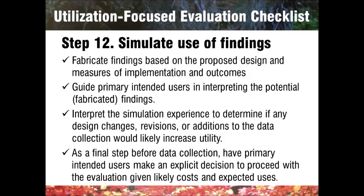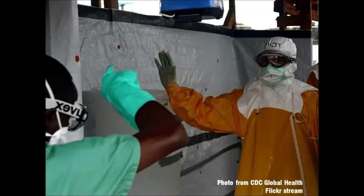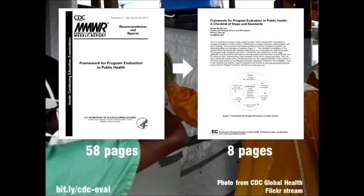Goldie McDonald, our guest discussant, isn't just a checklist fan — she's also an author of two important checklists on the checklist website. The first one is her checklist version of the CDC's Framework for Program Evaluation in Public Health. Public health professionals are expected to have some familiarity with evaluation, but if evaluation isn't your main job, you may not be inclined to read this dense 58-page document. Goldie's been evaluating public health programs for a fair amount of time, and she recognized the need for a more accessible, consumable way for busy practitioners to learn the framework's content.